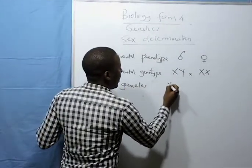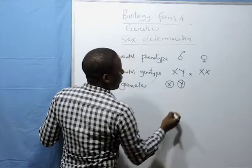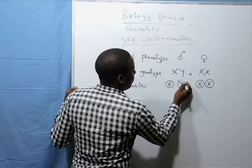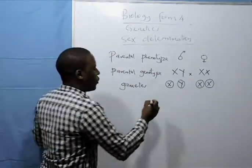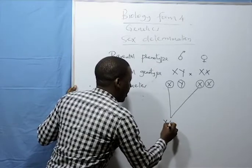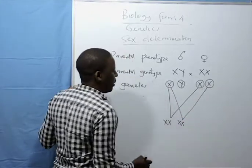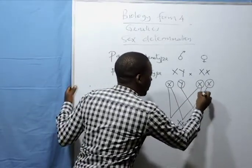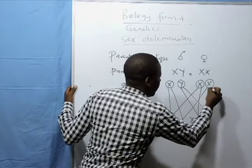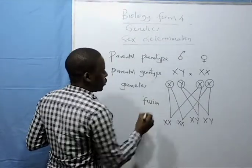The male is heterogametic, which means they will form two different gametes. The females are homogametic. Make sure the circles are complete. The next cross: this gamete can fuse with that gamete to form a female; this gamete can fuse with that gamete to form a male. Fusion there, because they are fusing gametes.